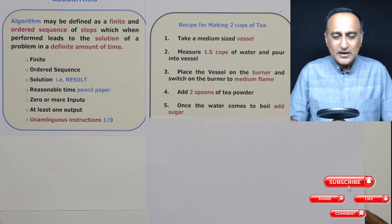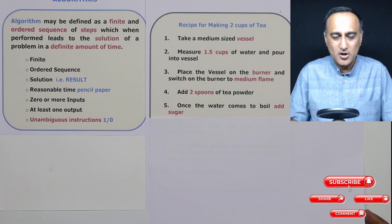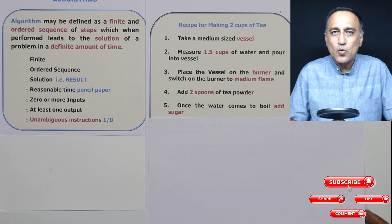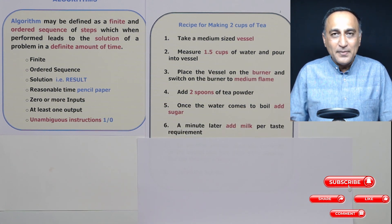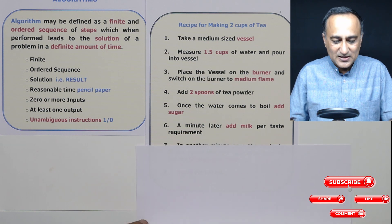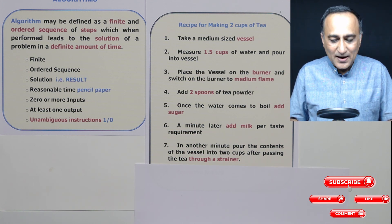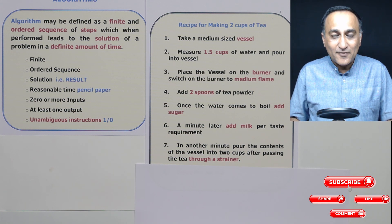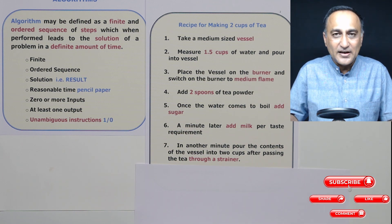Step five: once the water comes to a boil — maybe in two or three minutes — add sugar as per requirement. If someone has diabetes, you might not add sugar at all; otherwise, add one or two spoons. Step six: a minute later, add milk depending on whether you want the tea strong or sweet — add milk as per your taste. Step seven: take the contents of the vessel and pour it through a strainer into two cups. The strainer filters out all the tea powder.